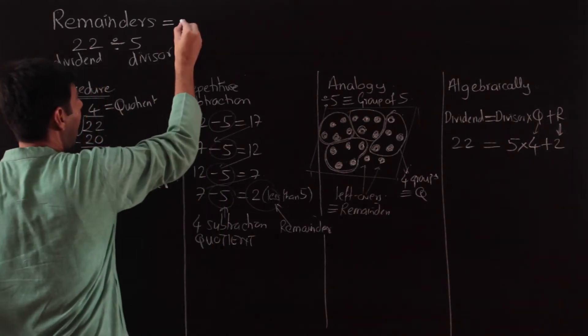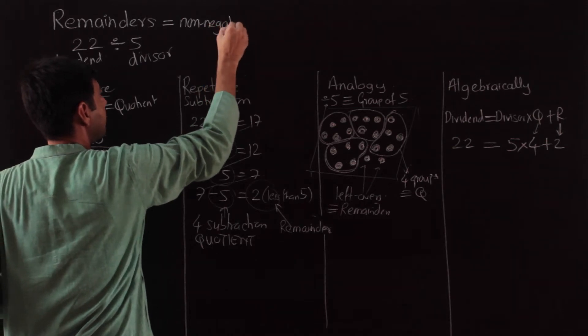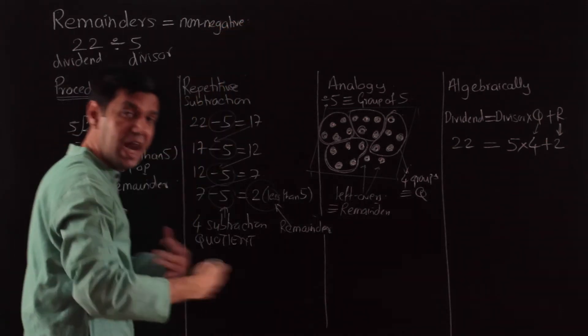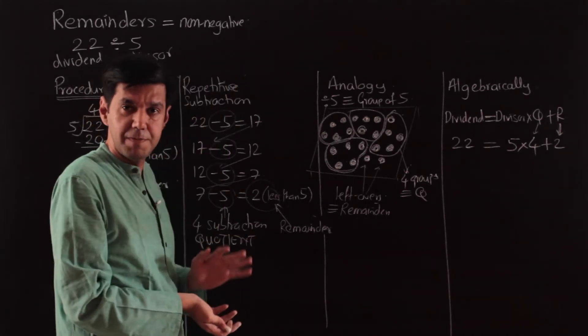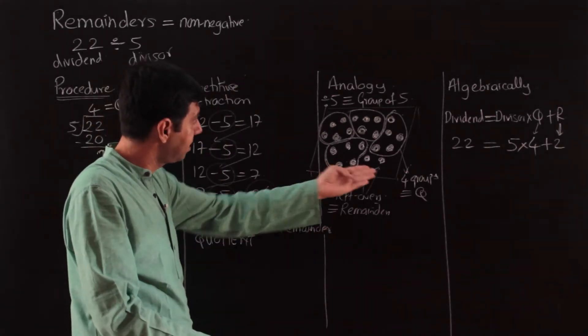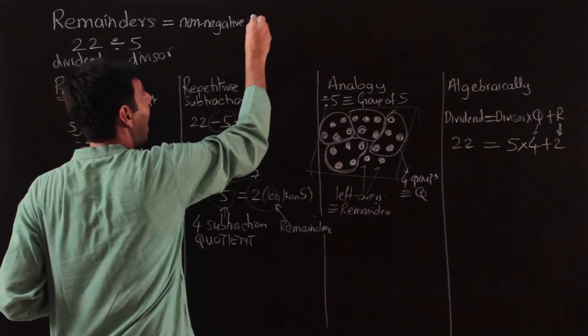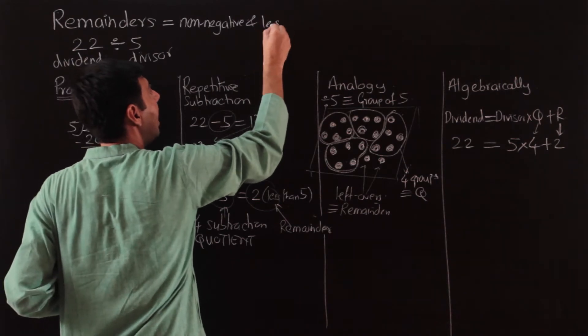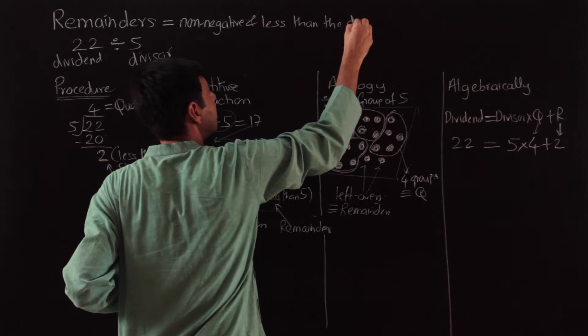So remainders have to first be non-negative. What is left with me? I might not be left with anything—0 is possible. I might be left with 1, 2. In this case I was left with 2. So I could have non-negatives left with me, and they have to be less than the divisor.